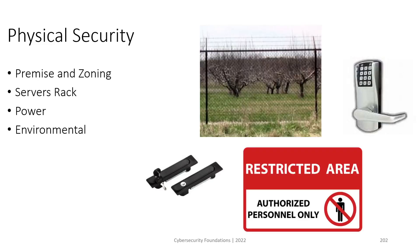Physical security covers a lot of domains: security of the premises or zone where our company is located, security of data centers or server racks, security of power sources and power redundancy, and different power-related threats such as rapid increase or decrease in voltage, which can cause device malfunction, as well as blackouts. We also have environmental physical security such as fire and smoke detectors.